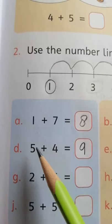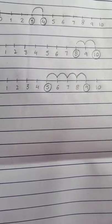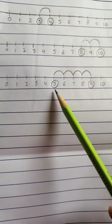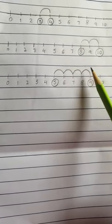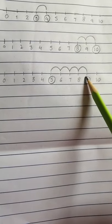In part D you can see there is 5 and 4. Make a number line for 5 and 4. We start with 5 and we will jump 1, 2, 3, 4. 4 jumps are here and we get 9.